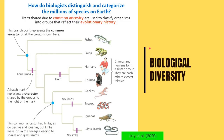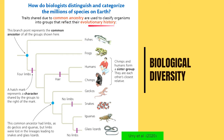The main topic of this series is biological diversity. How do biologists distinguish and categorize the millions of species on Earth? What they look into are traits shared due to common ancestry — traits that are similar because they descended from a common ancestor — and they use that to classify organisms in a way that reflects their evolutionary history, or how they changed over time.